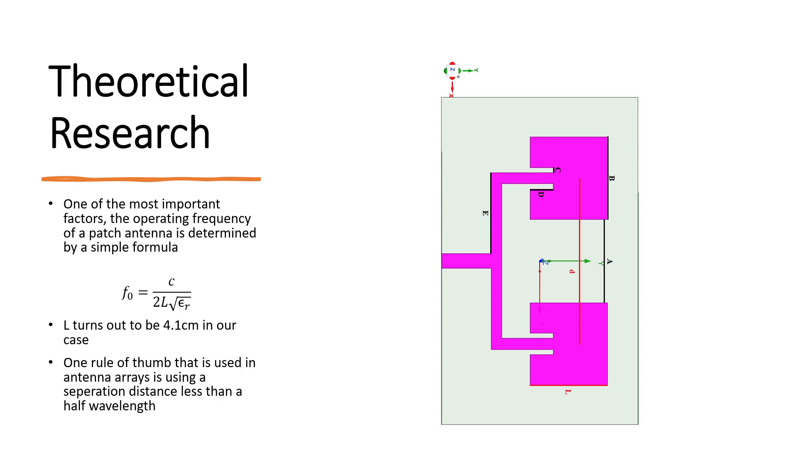One rule of thumb that is used in antenna arrays is using a separation distance less than a half wavelength. Because using a separation distance which is greater than the half wavelength may provide unwanted side lobes, which is not desirable.